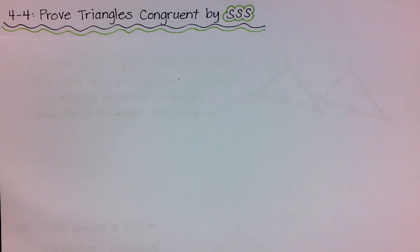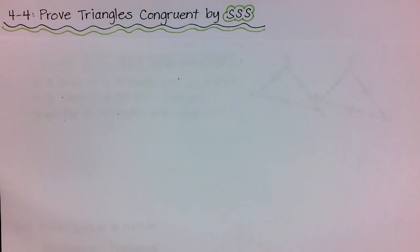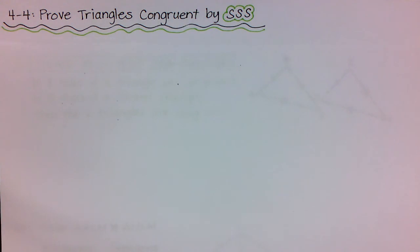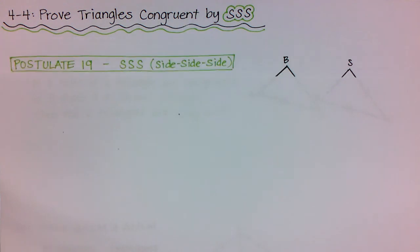Hello class, today's lesson is 4-4 in your textbooks and it's all about how to prove triangles congruent by this thing called SSS. It is a postulate that we're going to learn that is all about side-side-side. This is going to start some really cool things that we're going to learn about triangles, so let's go ahead and write this down.